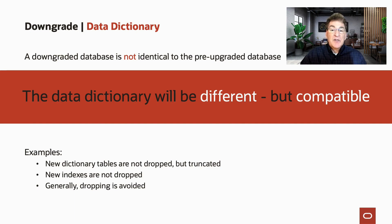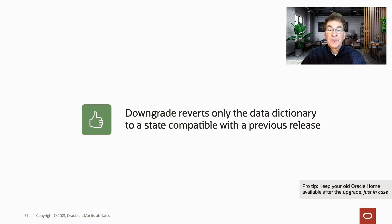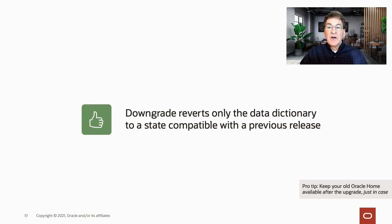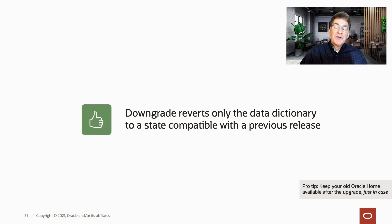Still, the downgrade process guarantees that the database functions and operates as it had prior to the upgrade-downgrade process. Compatible state is the key phrase here. We emphasize this because we encounter customers from time to time who are scratching their heads about their downgraded database not being exactly the same as it was before.